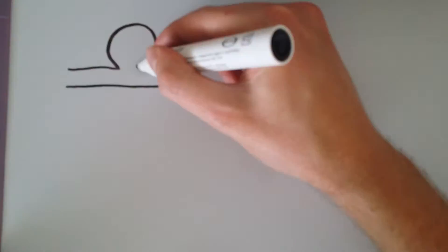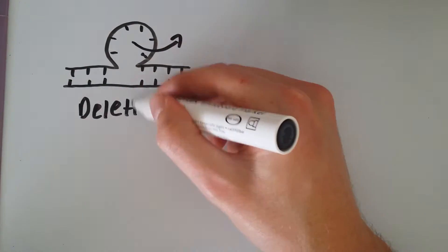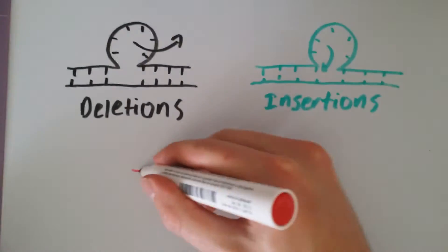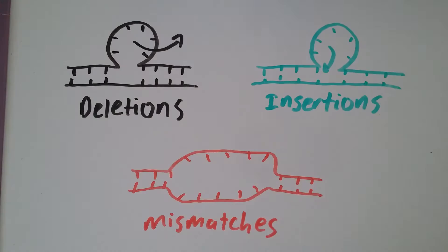So what is MAGE? MAGE is a technique that allows precise changes such as deletions, insertions and mismatches to be made at any specific position within a genome.